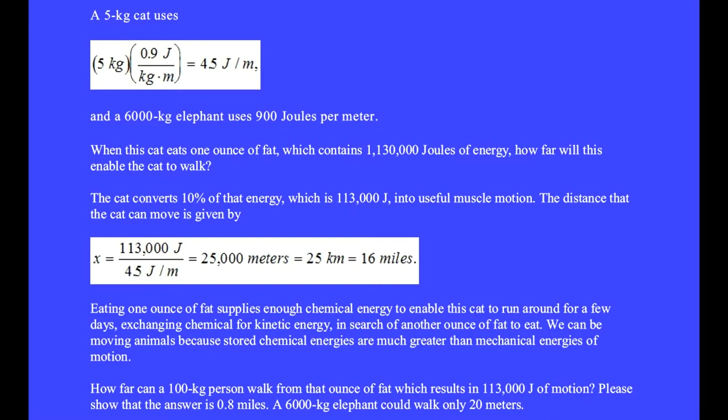Eating one ounce of fat supplies enough chemical energy to enable this cat to run around for a few days, exchanging chemical for kinetic energy in search of another ounce of fat to eat. We can be moving animals because stored chemical energies are much greater than mechanical energies of motion. How far can a 100-kilogram person walk from that ounce of fat? Please show that the answer is 0.8 miles. A 6,000-kilogram elephant could walk only 20 meters.